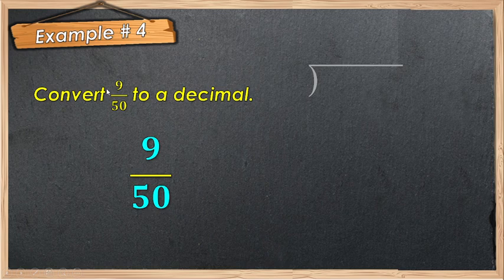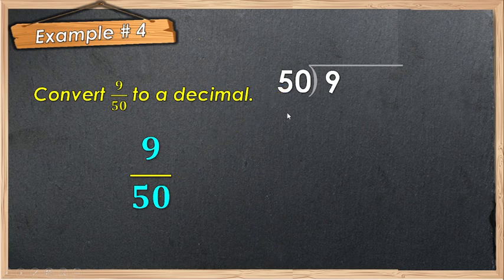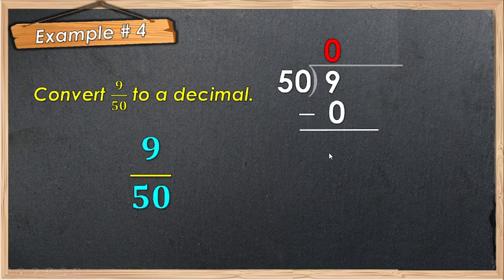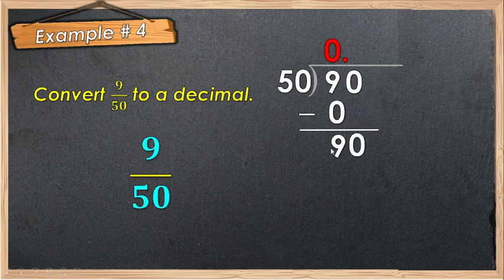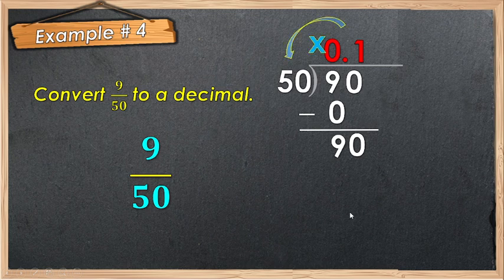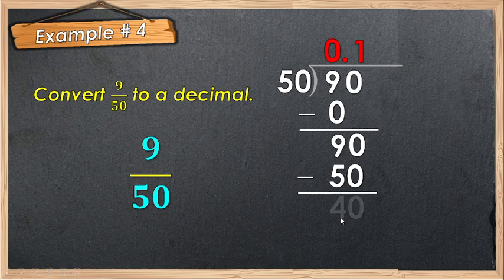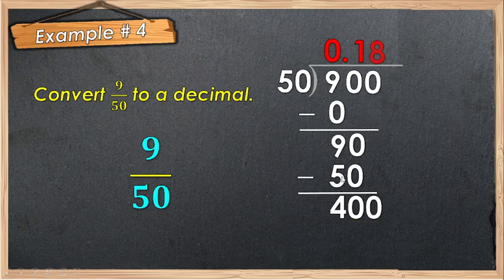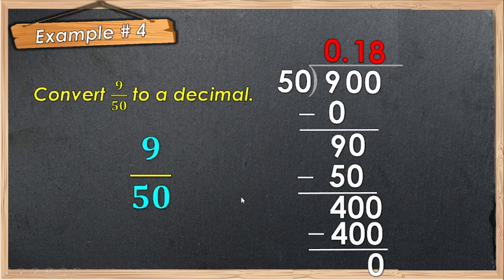Example number 4: 9 over 50. 9 is inside the long division bar and 50 is outside. Proceed to division. 9 divided by 50, the answer is 0. Multiply: 0 times 50 is 0. 9 minus 0 is 9. Add 0 and place the decimal point. Bring it down: we have 90. How many 50s in 90? The answer is 1. 1 times 50 is 50. 90 minus 50 is 40. Add 0: we have 400 divided by 50, the answer is 8. 8 times 50 is 400. Subtract: 400 minus 400 is 0. Therefore, the equivalent decimal of 9 over 50 is 0.18.